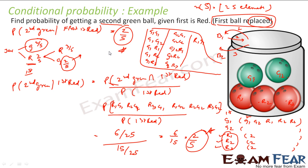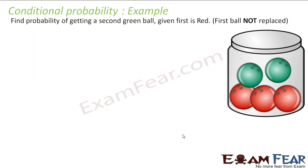Now let's take the same example where the ball is NOT replaced. You take out one ball and then take out another — only a two-step process; you don't replace the ball. The same question: find the probability of getting a second green ball given the first is red. Let's solve this using the graphical way first.